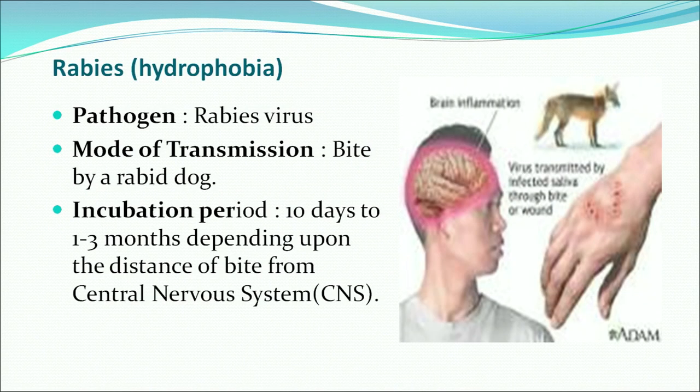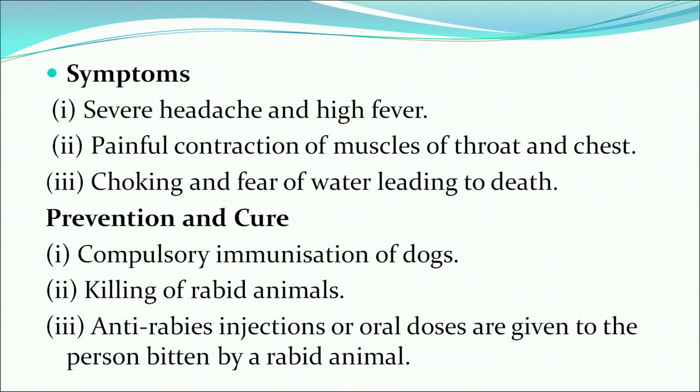The next disease is rabies, also called hydrophobia. Its pathogen is the rabies virus and it is transmitted through the bite of a rabid dog. Symptoms include severe headache, high fever, painful contraction of muscles of the throat and chest, choking and fear of water, leading to death. Prevention includes compulsory immunization of dogs, killing of stray animals, and administering an anti-rabies injection to the patient.